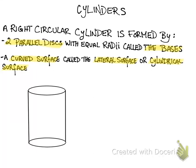Cylinders. A right circular cylinder is formed by two parallel disks with equal radii called the bases, and a curved surface called the lateral face, or sometimes known as the cylindrical surface.